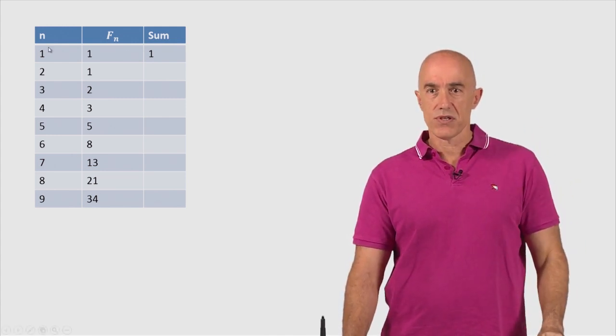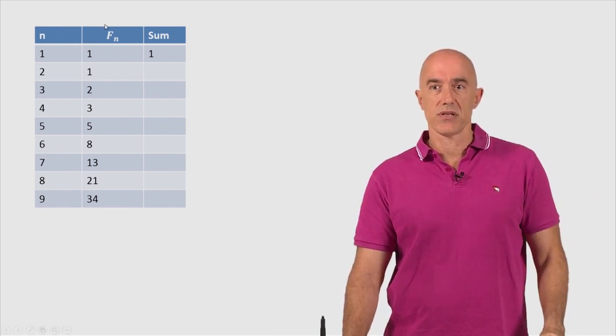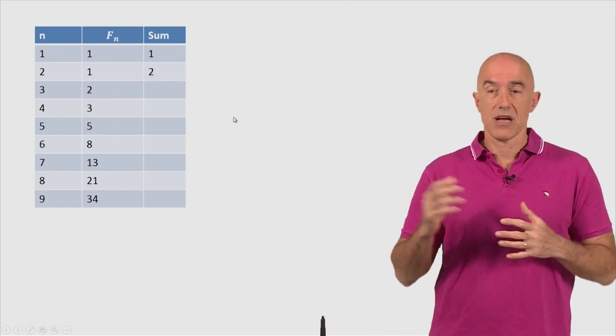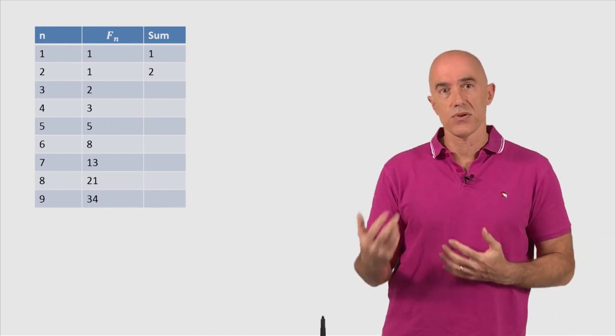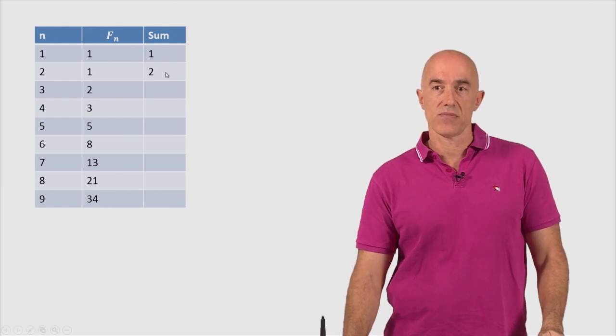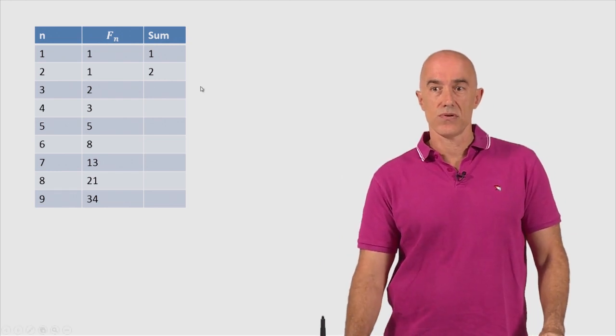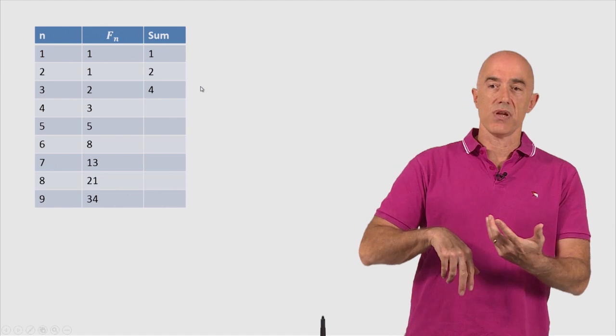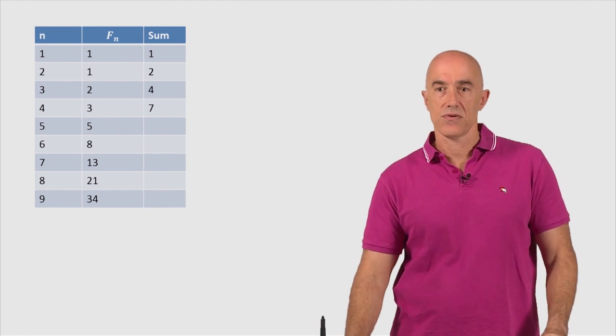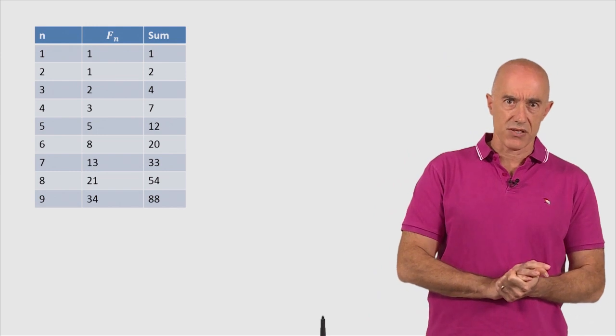So the sum of the first Fibonacci number is 1. It's just F sub 1. The sum of the first two Fibonacci numbers is 1 plus 1, so that will be 2. The sum of the first three is 1 plus 1 plus 2. But actually, all we have to do is add the third Fibonacci number to the previous sum. So we need to add 2 to the number 2, so we get 4. And then we add 3 to the number 4 to get 7. And then we add 5 to the number 7 to get 12. And so on. So we can get the sum of the first n Fibonacci numbers.